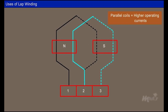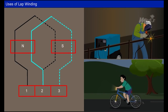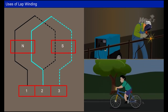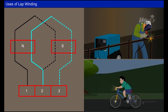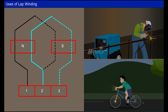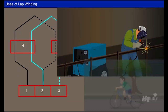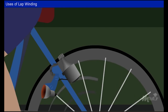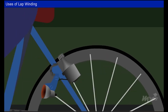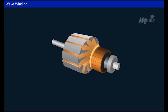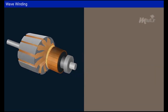In lap winding, the coils overlap and are parallel to each other, so the current capacity of each winding gets added, providing higher operating current. Therefore, lap winding is used in applications requiring high current and low voltage. One such application is the welding generator machine, which produces higher current for welding purposes. A dynamo is another application producing high current, as commonly seen in bicycles.